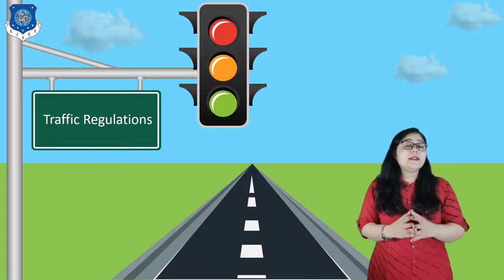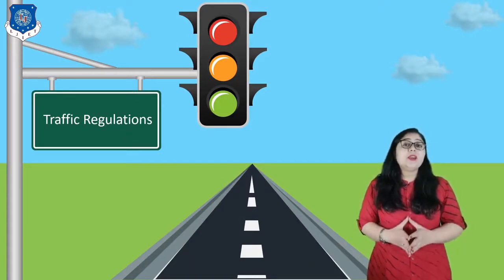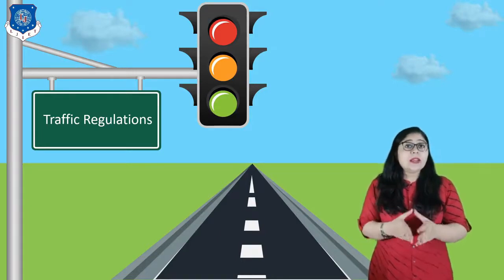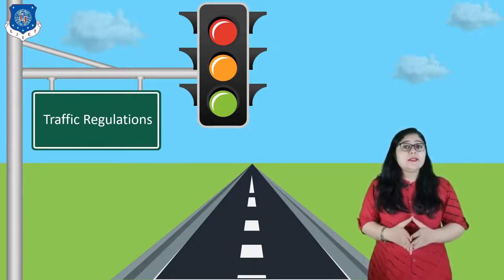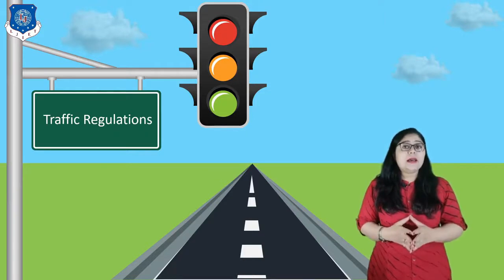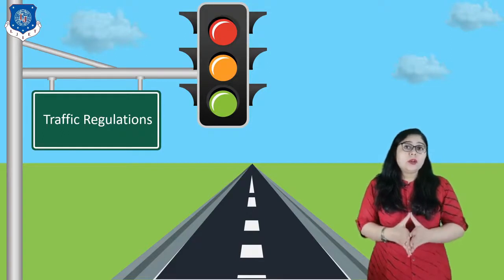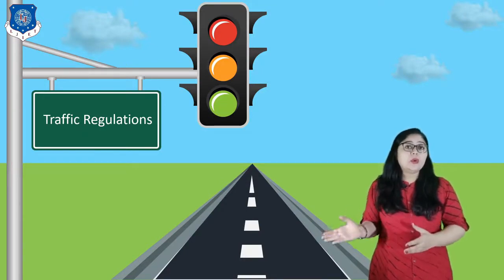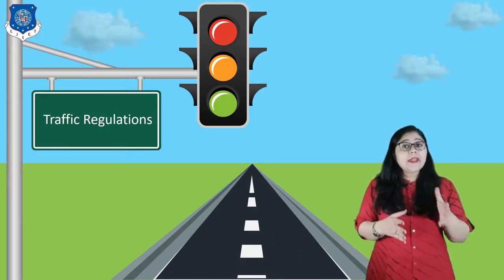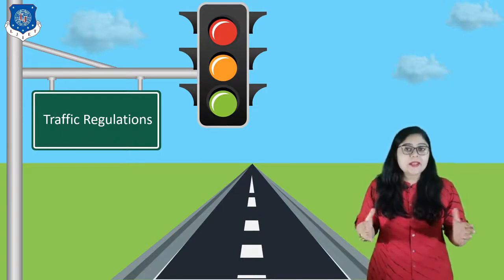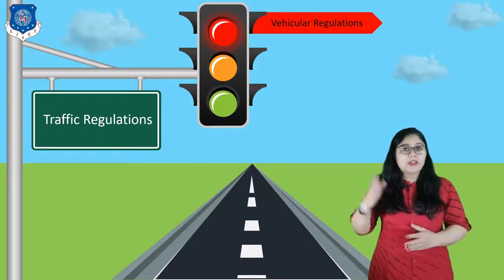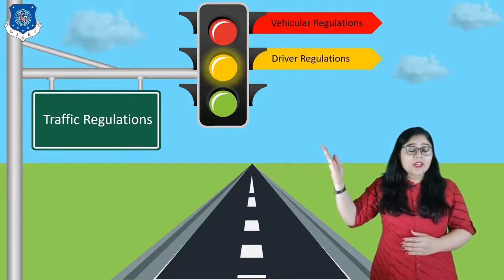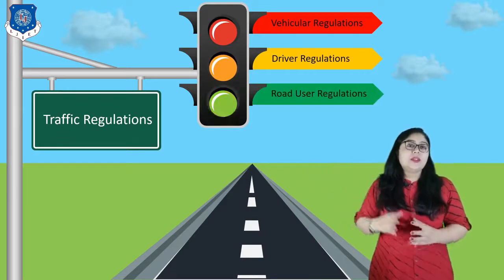Traffic regulations can be defined as the rules and regulations which guide the behavior or action of road users. This is in place in order to prevent accidents and enhance the free flow of traffic. Some traffic rules are like do not drink and drive. In order to have safe traffic operations on road, it is essential to impose adequate traffic regulations. It is divided into three parts: Vehicular Regulation, Driver Regulation, and Road Users Regulation.